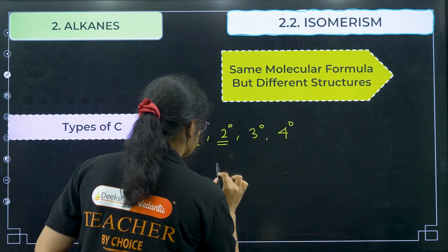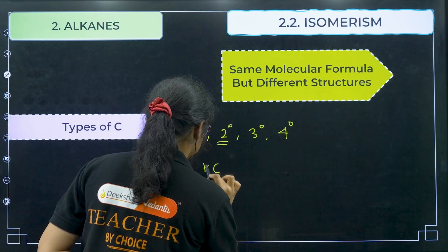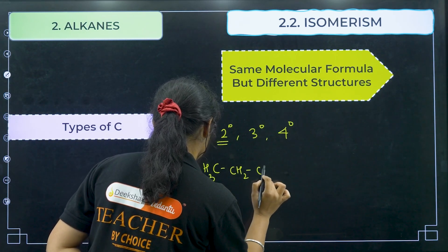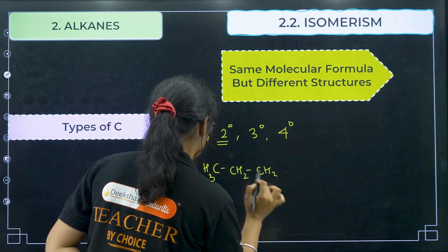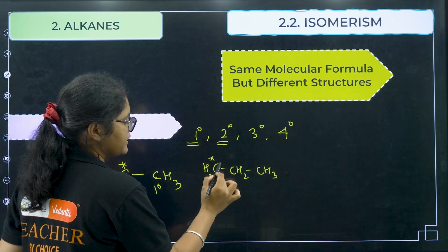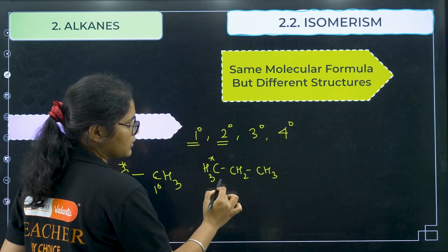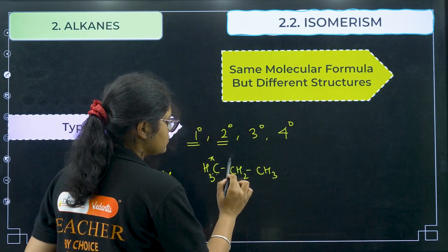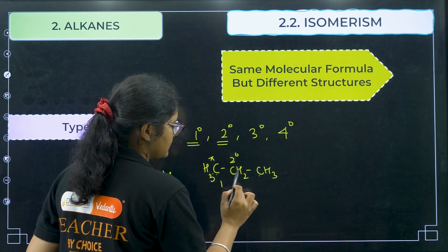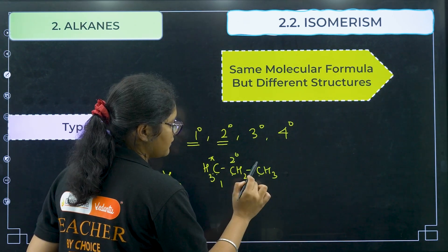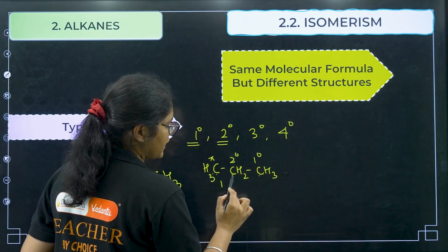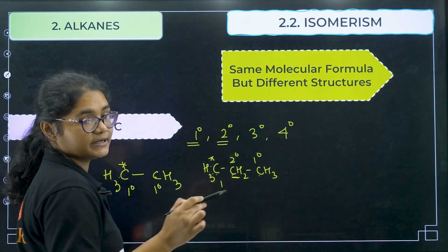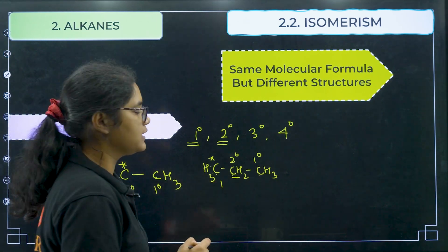Secondary carbon: suppose I have a chain structure. The end carbon is attached to one other carbon, so it is primary. The middle carbon is attached to two carbons, so it is secondary. And the other end carbon is also attached to only one carbon, so it is also primary. So that particular carbon attached to 2 carbons is a secondary carbon.